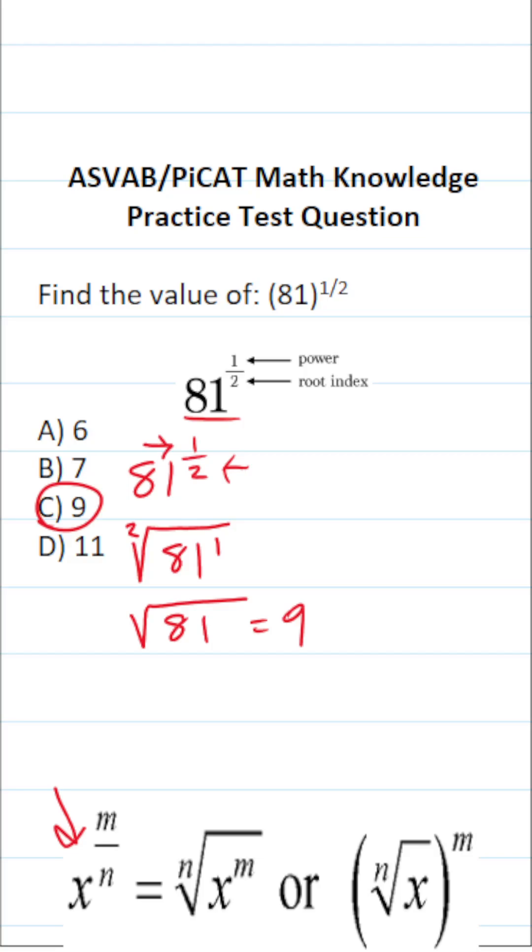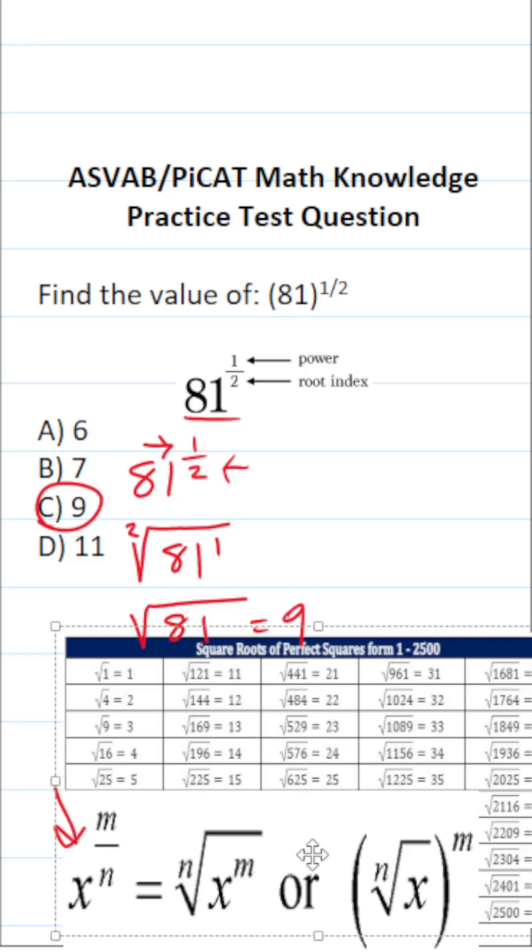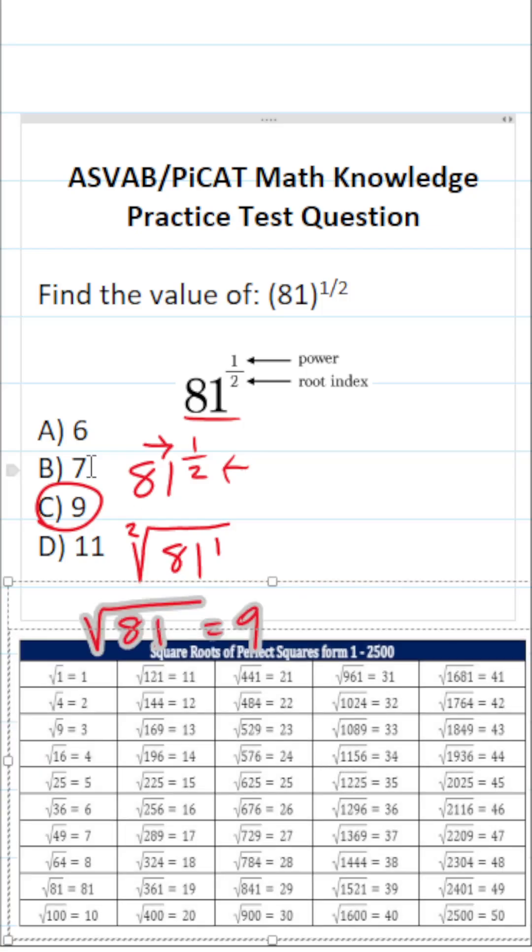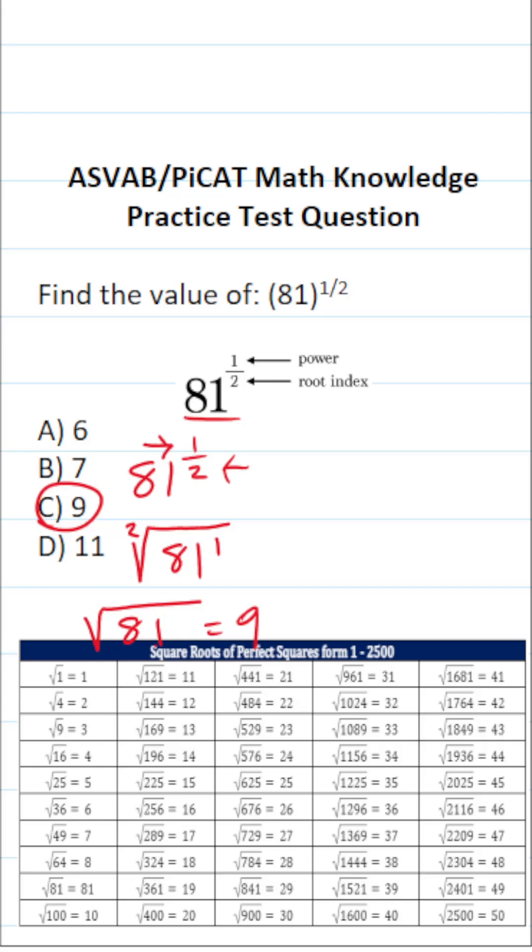Now for the ASVAB and PiCAT I want to point this out as well. You should know the square roots of perfect squares from at least 1 to 20. That is you should know all of these.